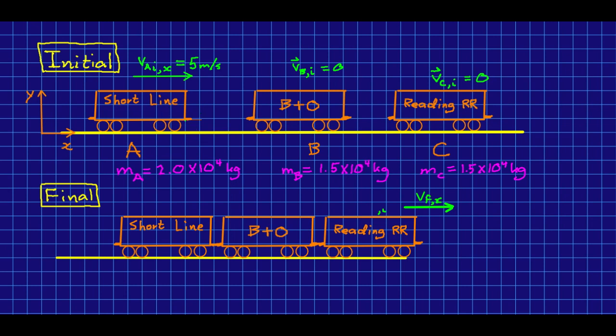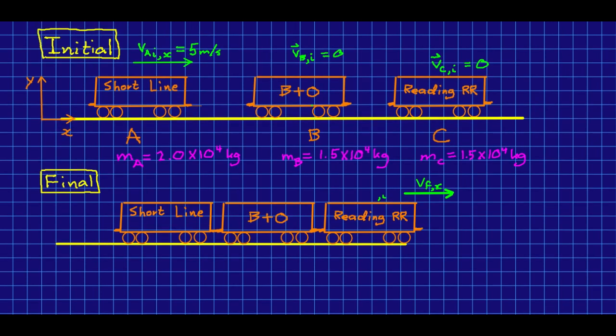This might seem a little complicated because we'll first have to figure out what happens in the collision between the first car and the second, and then between them and the third. But in fact, it isn't nearly that difficult because we can use conservation of momentum and go straight from the beginning to the end.